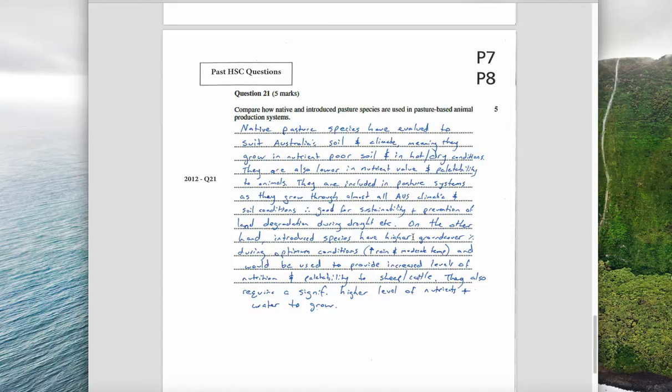On the other hand, introduced species have higher ground cover percentage during optimum conditions - high rainfall and moderate temperature. They would be used to provide increased levels of nutrition and palatability to sheep and cattle. They also require a significantly higher level of nutrients and water to grow, and that's why they would be used in pasture-based animal production systems.